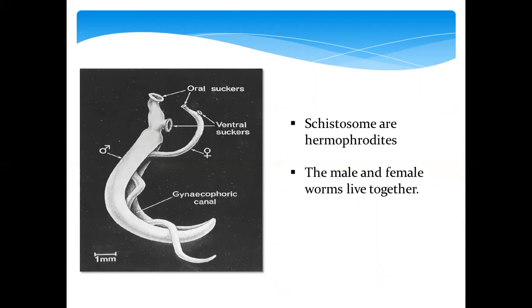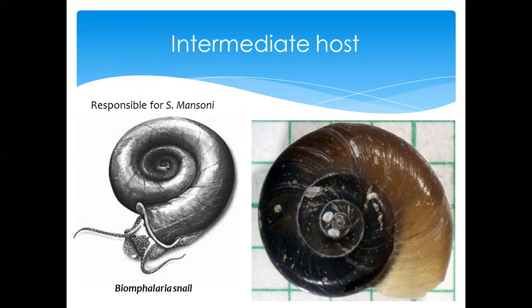Looking at the structure of the schistosome itself: 'schistosoma' means split shape, and schistosomes are hermaphrodites because they have the male and female worms living together. As you can see from this image, we have the male section and the female section living together.